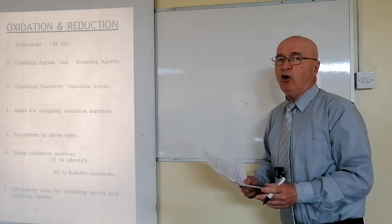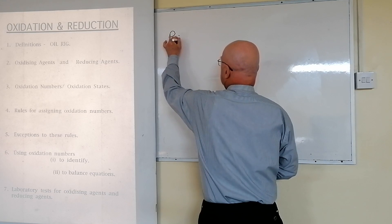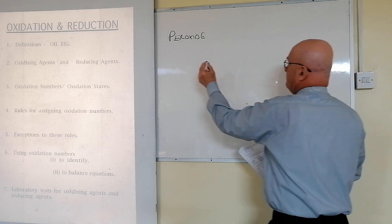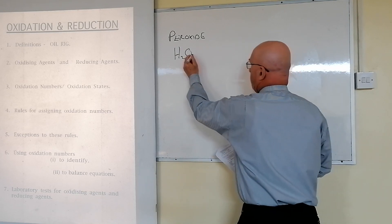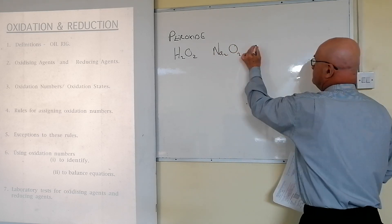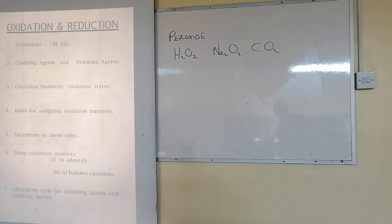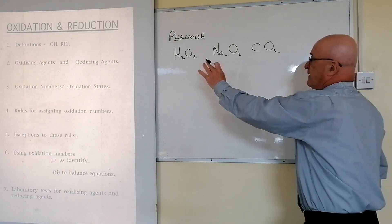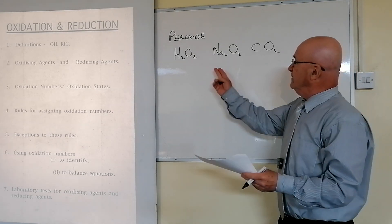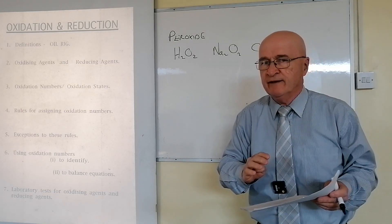Exceptions to the rules: oxygen is always minus two, except for peroxides, where it is minus one. Now here are examples of peroxides — that's a peroxide, and that's a peroxide; that one is not a peroxide. How will you recognize a peroxide if you see one? Realistically, they're the only two you're likely to get in the Leaving Cert.